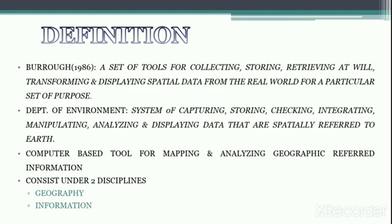Let's move into the definition of GIS. There have been several attempts to define GIS; however, it should be noted that any definition will depend on the background and viewpoint of the person or organization using it. Burrough in 1986 defined GIS as a set of tools for collecting, storing, retrieving at will, transforming and displaying spatial data from the real world for a particular set of purposes. The Department of Environment defined GIS in 1987 as a system of capturing, storing, checking, integrating, manipulating, analyzing and displaying data which are spatially referenced to the earth.